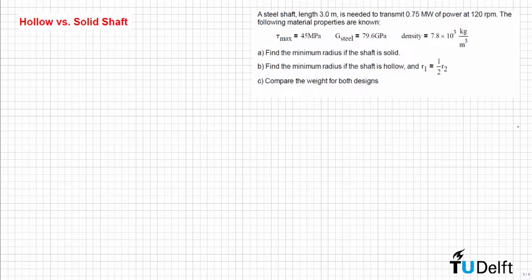In this problem, we have a 3-meter long steel shaft that we need in order to transmit 0.75 megawatts of power at 120 revolutions per minute. We have the material properties: tau max is equal to 45 megapascals, G of steel is equal to 79.6 gigapascals, and the density of the material is 7.8 × 10³ kilograms per meter cubed.